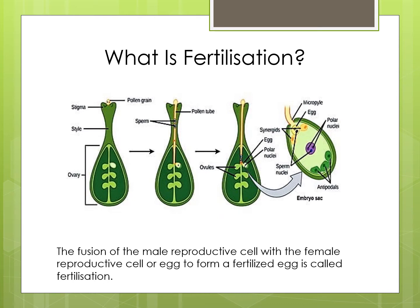The second diagram shows that the pollen tube grows downwards through the style and into the ovule. The male reproductive cell from the pollen grain travels down the pollen tube. The third diagram shows the male reproductive cell enters the ovule, where it will join or fuse with the female reproductive cell or egg.